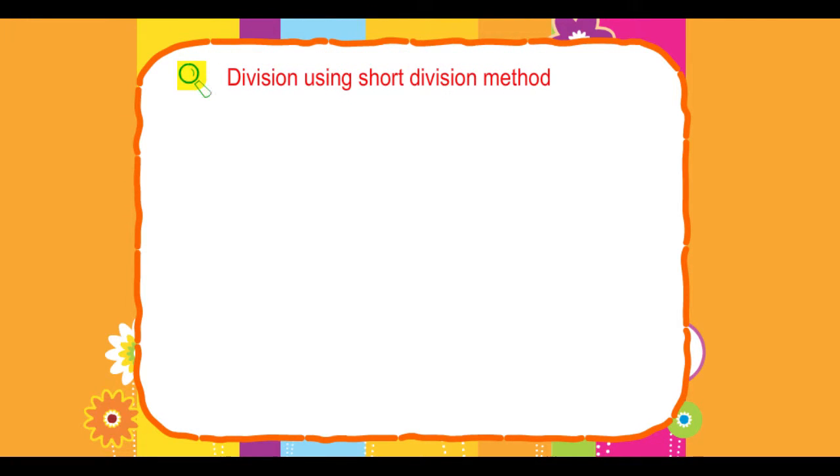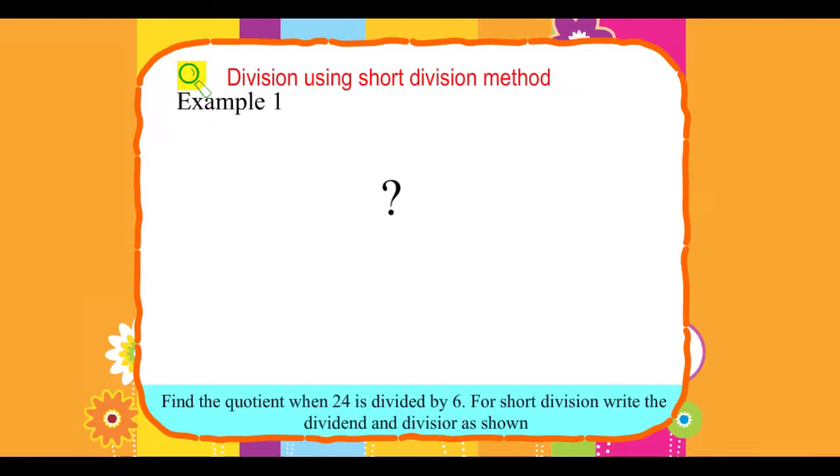Division using short division method. Example 1: Find the quotient when 24 is divided by 6. For short division, write the dividend and divisor as shown.